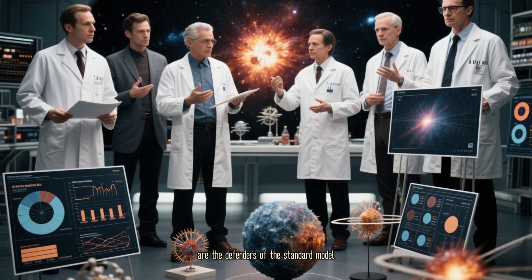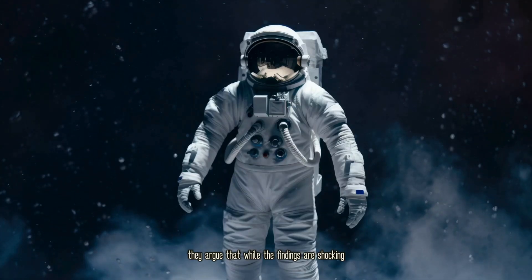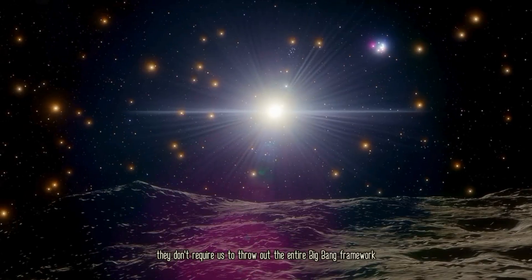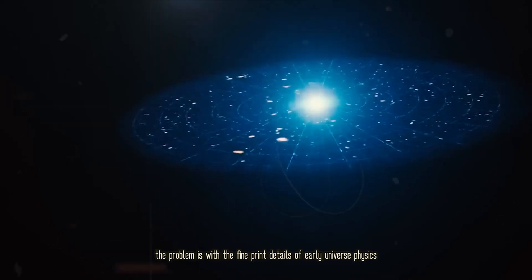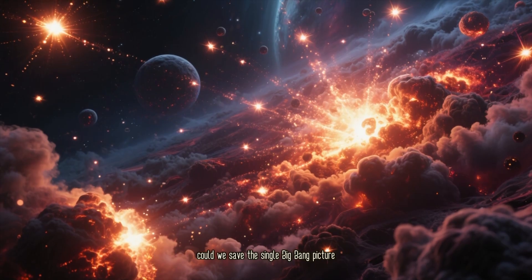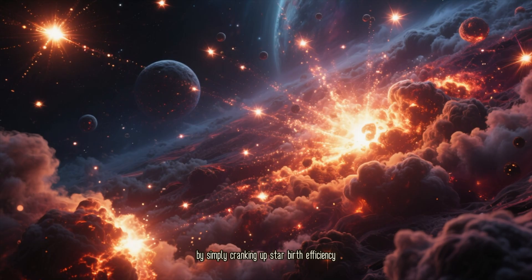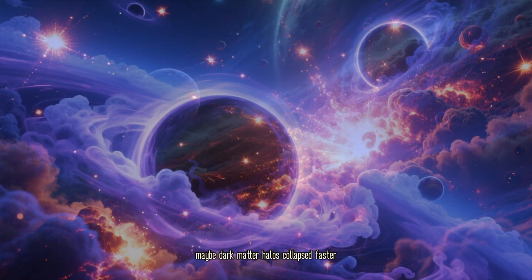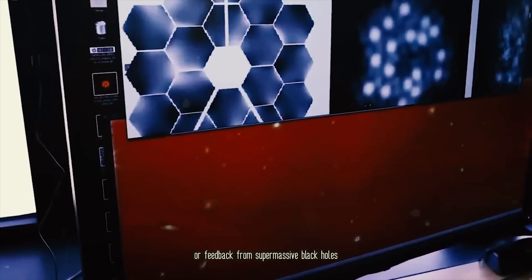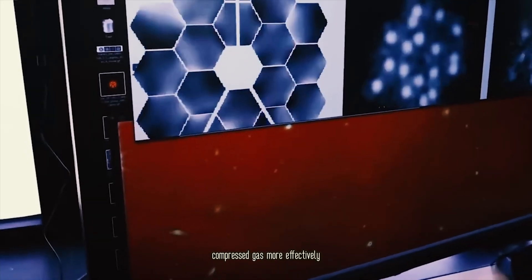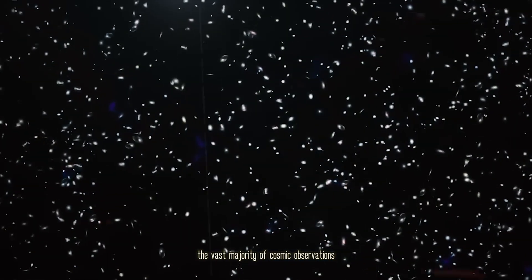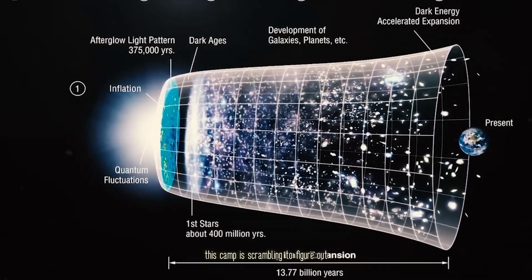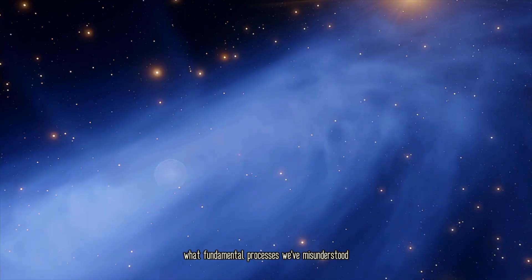On the other side of the debate are the defenders of the standard model. They argue that while the findings are shocking, they don't require us to throw out the entire Big Bang framework. Instead, the problem is with the fine print details of early universe physics. Could we save the single Big Bang picture by simply cranking up star birth efficiency? Maybe dark matter halos collapsed faster? Or feedback from supermassive black holes compressed gas more effectively? The Big Bang still explains the vast majority of cosmic observations. These early galaxies aren't universe breakers, they are assumption breakers. This camp is scrambling to figure out what fundamental processes we've misunderstood.